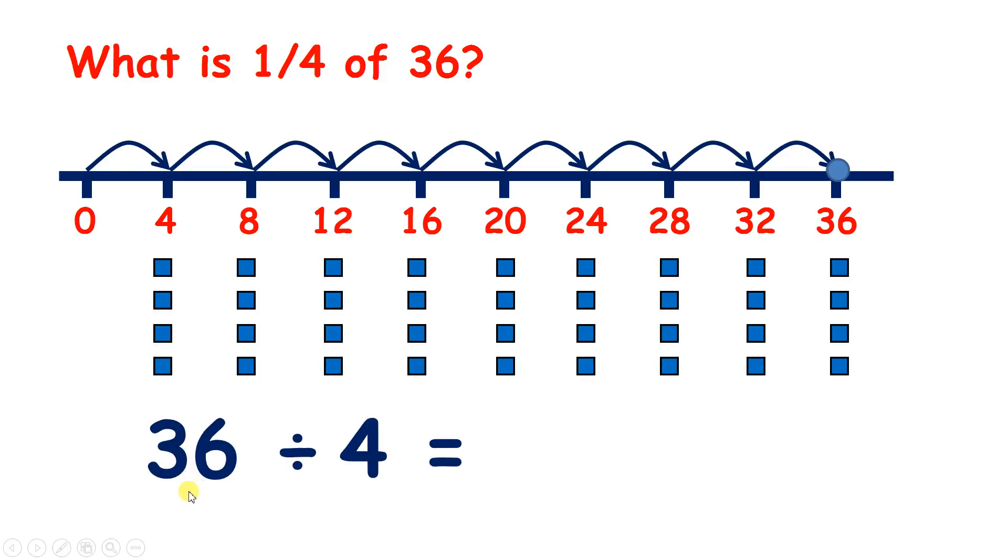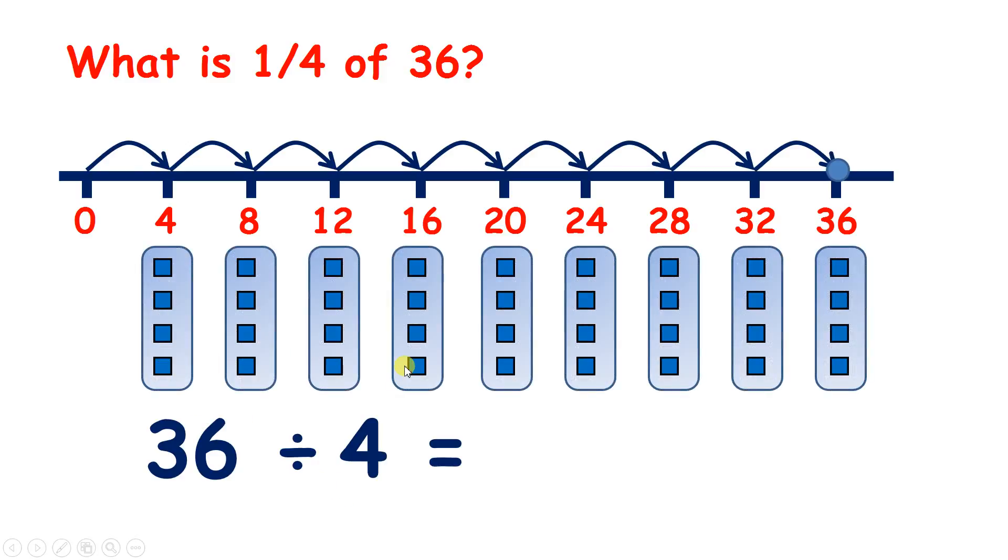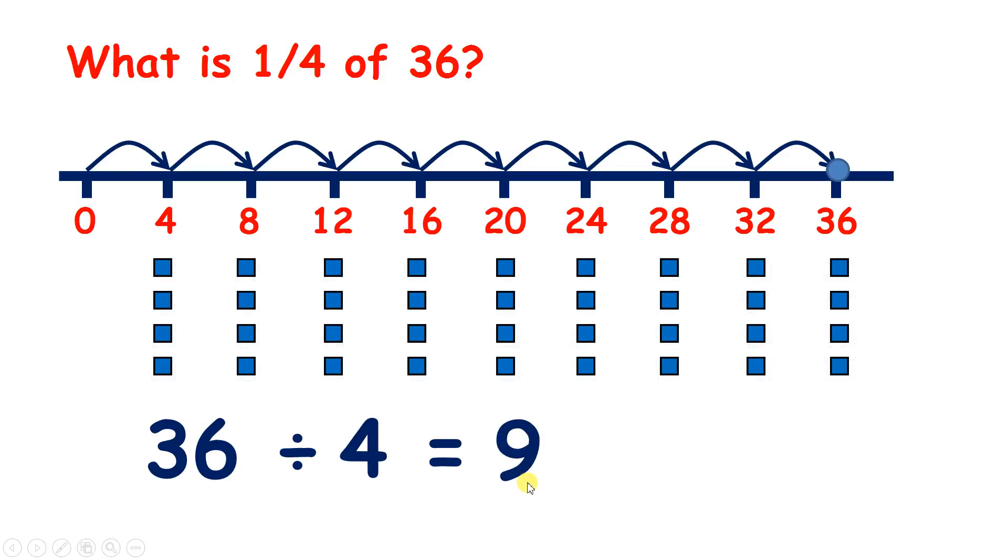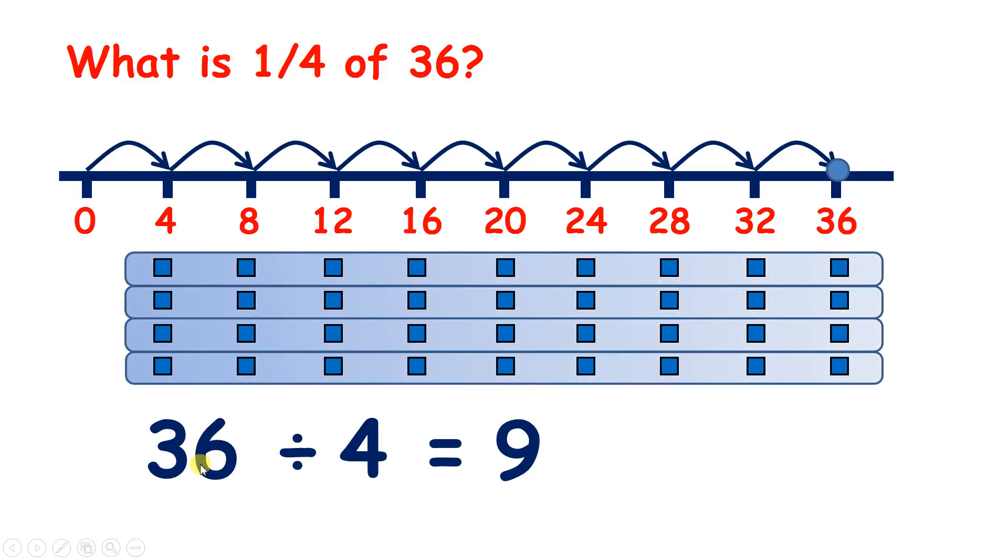So we have 36 divided by 4, and we've made 1, 2, 3, 4, 5, 6, 7, 8, 9 groups. So our answer is 9. Or if we divide 36 into 4 groups, then we'll have 9 in each group.